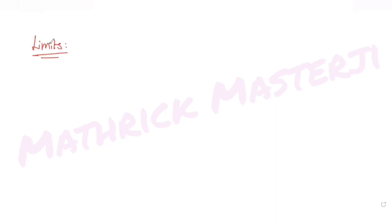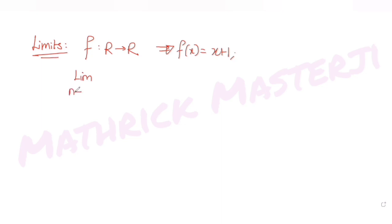Hi guys, I hope you are all doing well. Today's question is from the topic of limits. The question tells us that a function f of x, where x belongs to R, is given by f of x equals x plus 1. We need to figure out the value of the limit as n tends to infinity of 1 over n times the bracket containing f of 0, f of 5 over n, f of 10 over n,